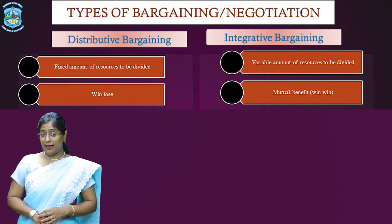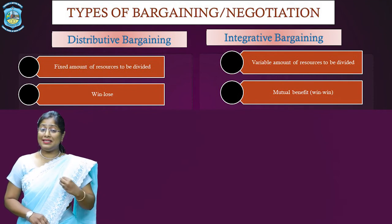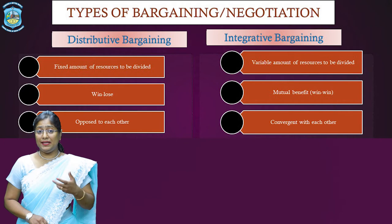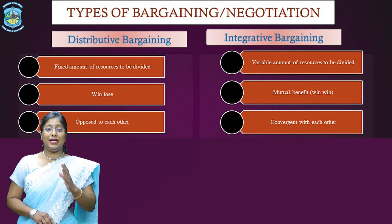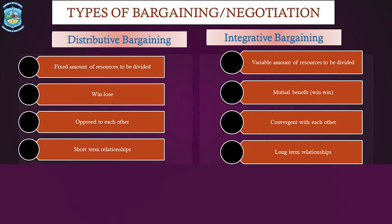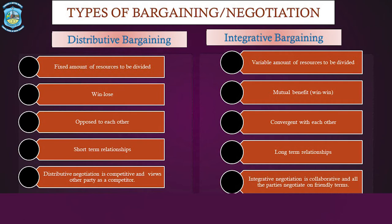Remember, under distributive bargaining, the conflicts or opinions are going to be completely opposing to each other. Whereas in case of integrative bargaining, it is going to be convergent. Under distributive bargaining, short-term relations are focused on, whereas in integrative bargaining, a long-term relationship is focused upon. Under distributive negotiation, the negotiation becomes very competitive and the other party is viewed as a competitor. Whereas under integrative bargaining, it is more collaborative in nature and people tend to negotiate on friendly terms.